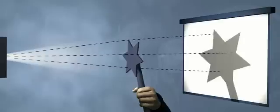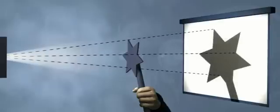Objects that do not allow light to pass through them are said to be opaque. Transparent objects allow light to pass through them.